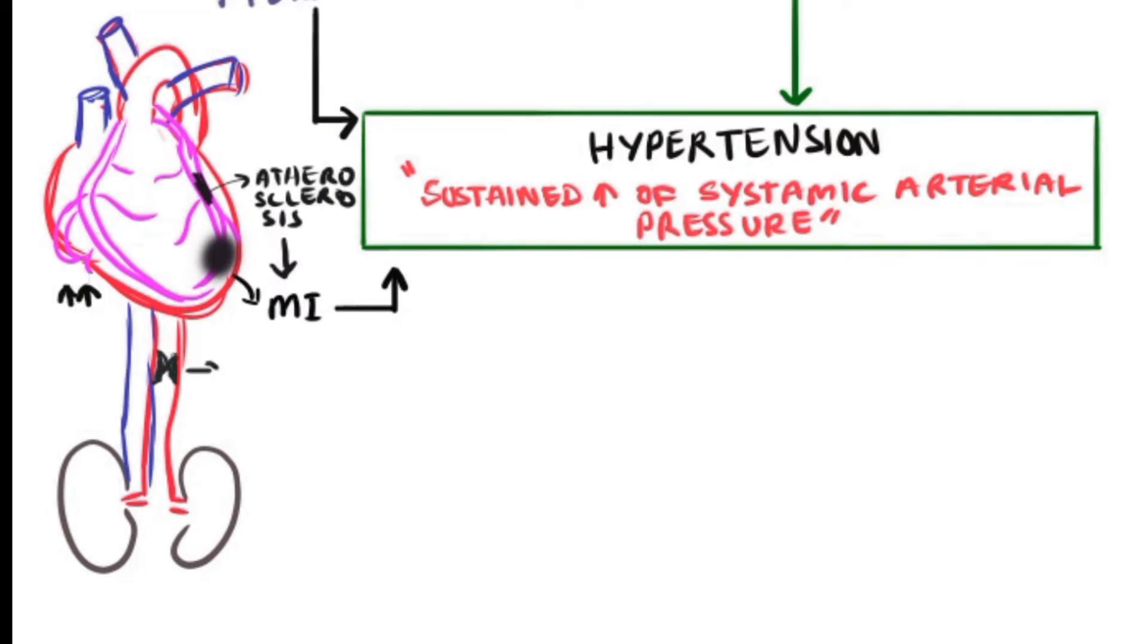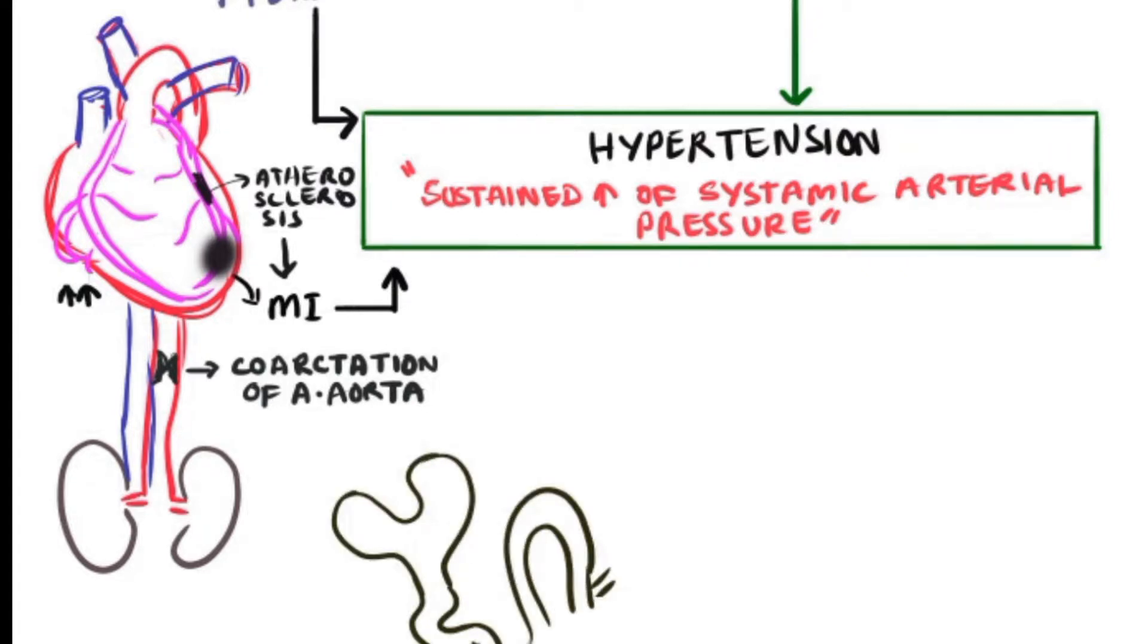Coarctation or narrowing of the abdominal aorta is one cause for hypertension that leads to decreased perfusion to the kidney, where the afferent arteriole of the nephron senses the low pressure and triggers the secretion of renin.